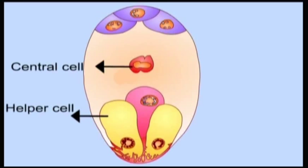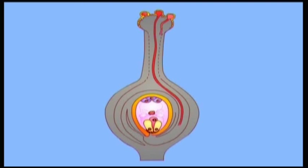The synergids are also known as helper cells. These cells direct the growth of pollen tube towards the egg. They have a beak-like structure and are situated near the micropylar end.